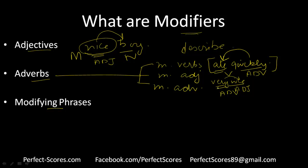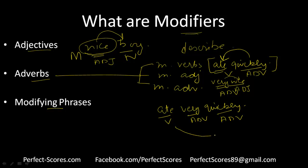When we talk about how adverbs can modify adverbs: 'he ate very quickly.' Ate is the verb, very is an adverb, quickly is also an adverb. He ate quickly — quickly is modifying ate. And how quickly did he eat? He ate very quickly, so very is the modifier.